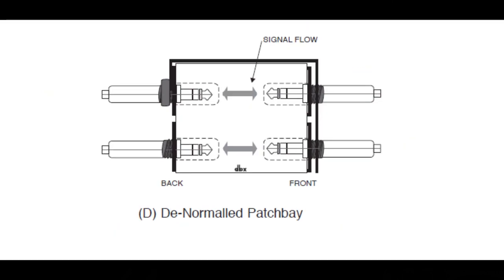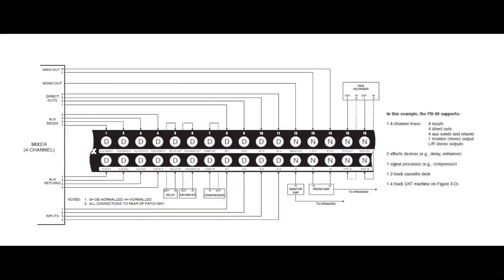The next term is denormaled, or non-normaled. This means each front panel jack is routed directly to the related rear panel jack — for example, the first upper front jack is connected to the first upper rear jack. Denormaled setups are useful with effects devices or other input-output devices because direct signal flow helps reduce feedback and the chance of oscillations through signal loops. It's common to set up your audio patch bay with some parts normaled and some parts denormaled so that your front panel patch points are as flexible as possible.